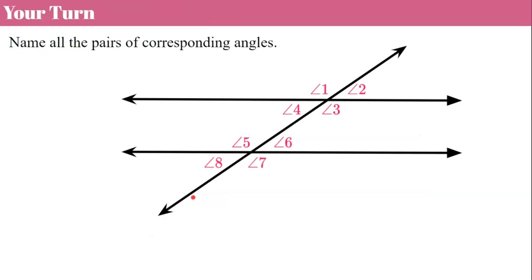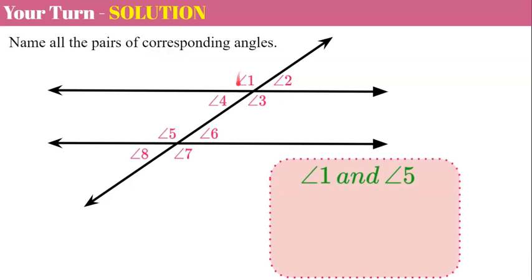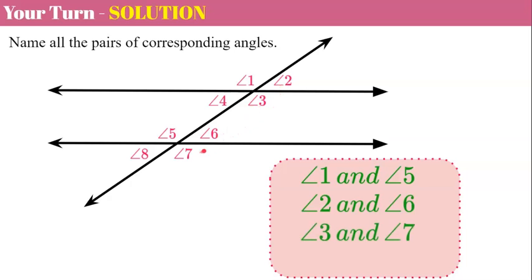Now it's your turn. Pause the video and, using this diagram, write down all the pairs of corresponding angles. Welcome back. Our first pair is angle 1 and angle 5 — above the parallel line and to the left. Next is angle 2 and angle 6 — above and to the right. Angle 3 and angle 7 — both below the line and to the right of the transversal. And angle 4 and angle 8 — to the left of the transversal and below. These are the four pairs of corresponding angles.